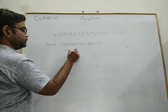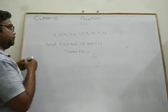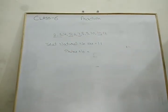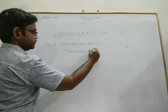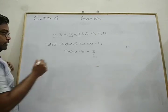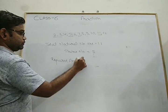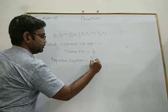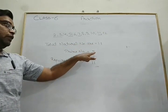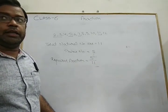Now, how many prime numbers do we have? I am underlining the prime numbers: 2, 3, 5, 7, and 11. So there are 5 prime numbers. The required fraction equals 5 upon 11 — meaning out of 11 natural numbers, 5 are prime numbers. This is the concept of fraction.